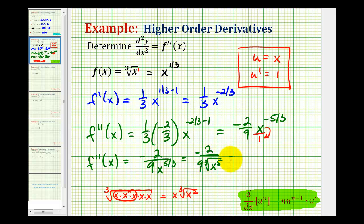So we can rewrite this as negative two all over nine x times the cube root of x squared. So it really depends on your instructor or your textbook as to which of these three forms would be expected as your final second derivative.